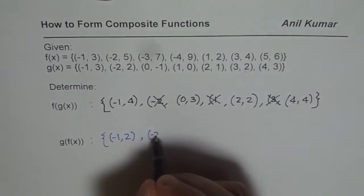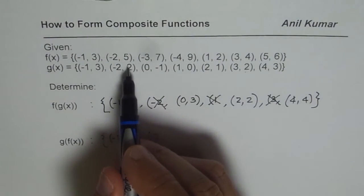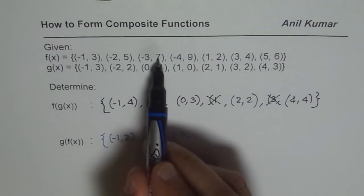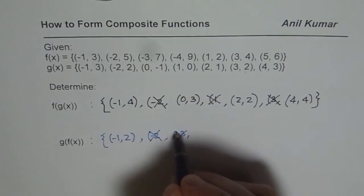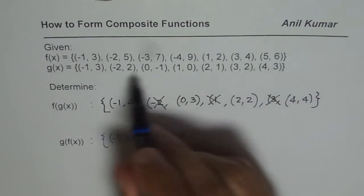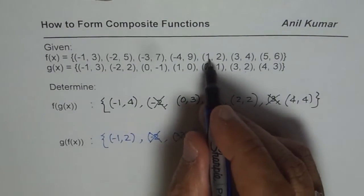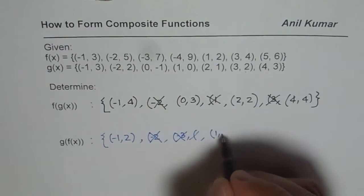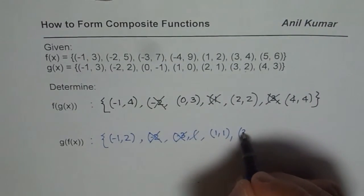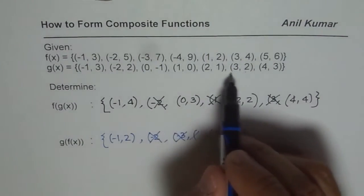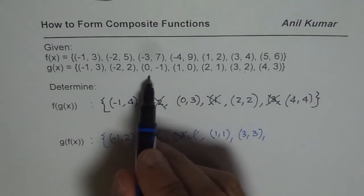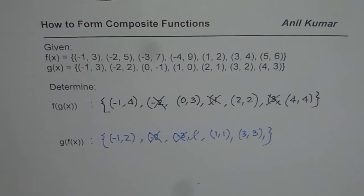For minus 2, f of minus 2 is 5, and g of 5 is not there, so we cannot take this. For minus 3, the output is 7 — we don't have 7 as input in g of x. For minus 4, we don't have 9 either. For x equals 1, output is 2, and g of 2 is 1, so that is fine. For x equals 3, output is 4, and g of 4 is 3 — perfect. For x equals 5, output is 6, but 6 is not in the domain of g of x. So g of f of x is a set of these 3 points.